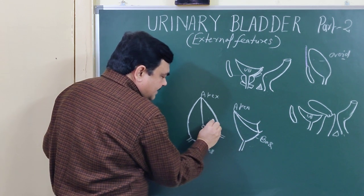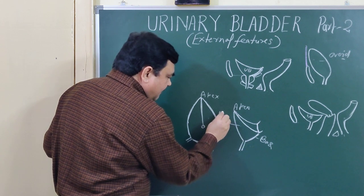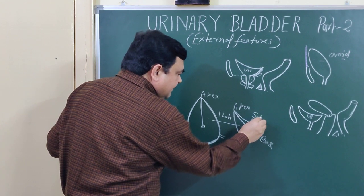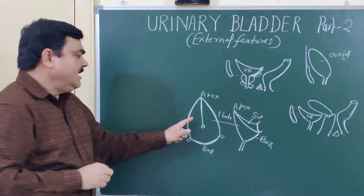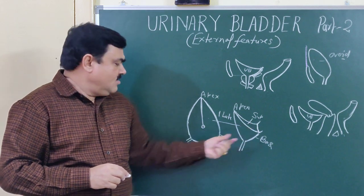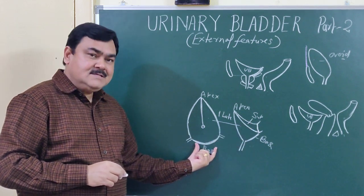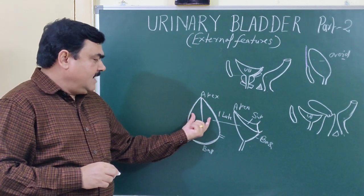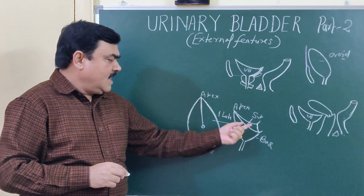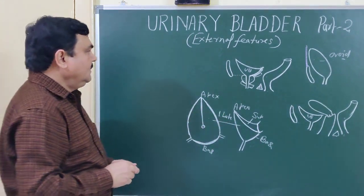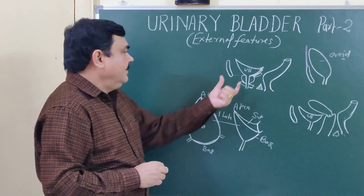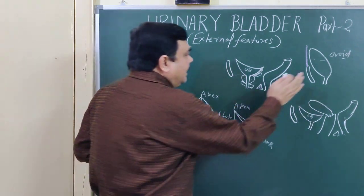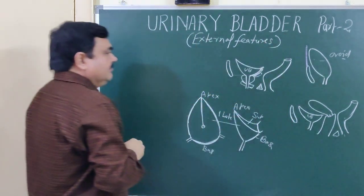The two surfaces on either side are the inferior lateral surfaces. This upper surface is the superior surface. Posteriorly, the posterior surface is the base. So the empty bladder has: apex, base or posterior surface, right and left inferior lateral surfaces, and a superior surface.